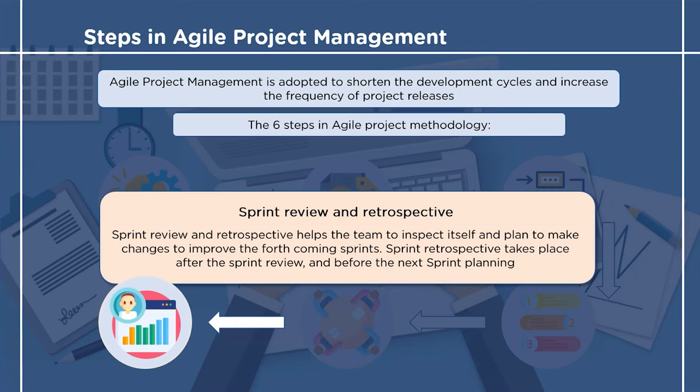The last step is the step of sprint review and retrospective. There are two meetings after each sprint. The first meeting is the sprint review, held with the stakeholders to show them the finished product. This helps both sides to build a relationship and discuss if there are any issues in the end product.